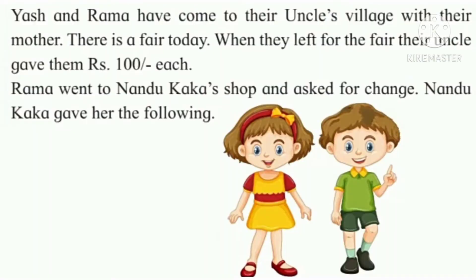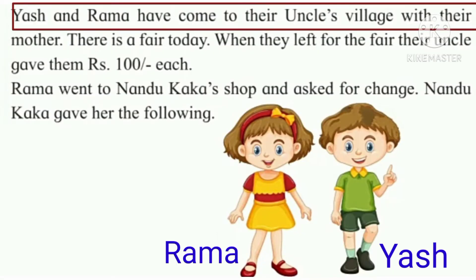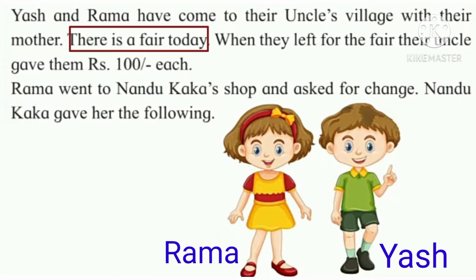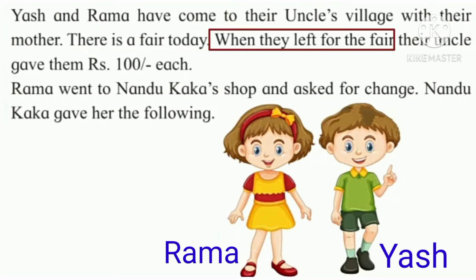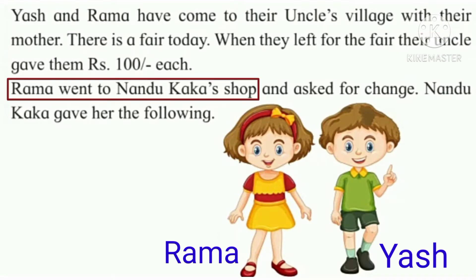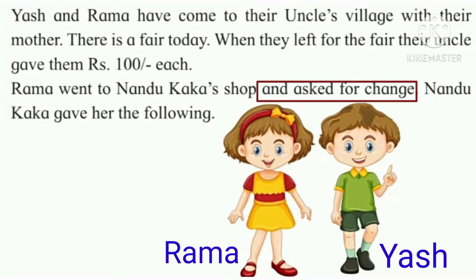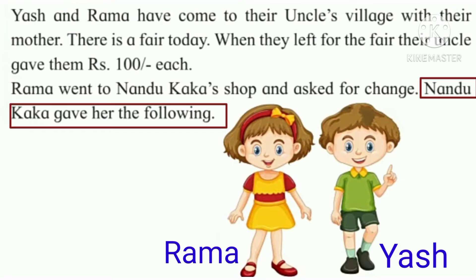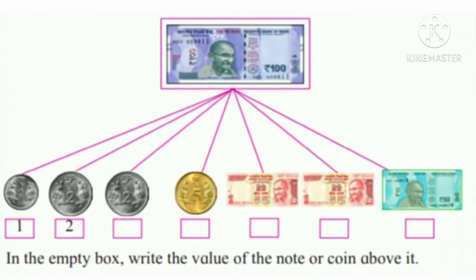Listen to what is given here. Yash and Rama have come to their uncle's village with their mother. There is a fair today. When they left for the fair, their uncle gave them rupees 100 each. Rama went to Nandu Kaka's shop and asked for change. Nandu Kaka gave her the following. Here is the change of rupees 100 that Nandu Kaka gave to Rama.